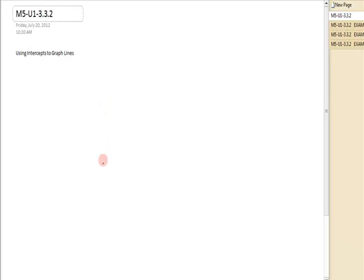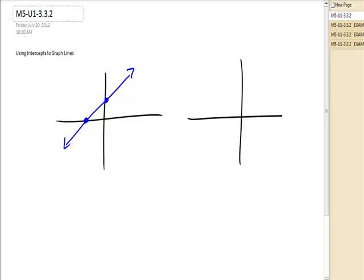If we're talking about a slanted line, you're always going to have an x-intercept and a y-intercept. But if we have a slanted line that goes through the origin, then the x and the y-intercept are actually the same point, 0, 0.